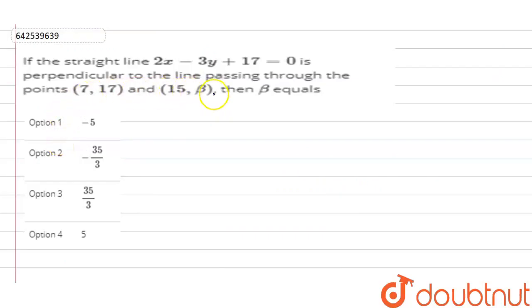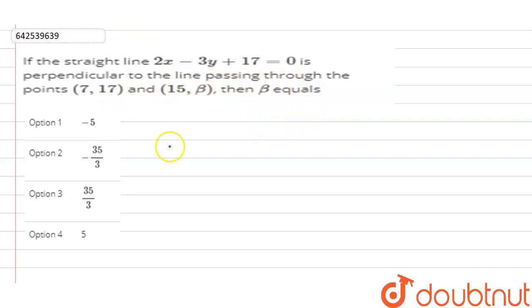If the straight line 2x - 3y + 17 = 0 is perpendicular to the line passing through the points (7, 17) and (15, β), then β equals.